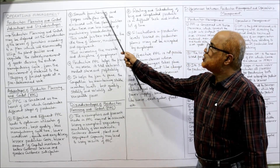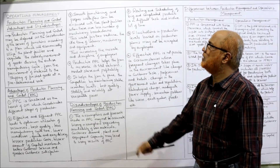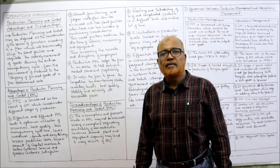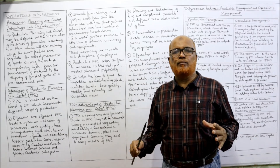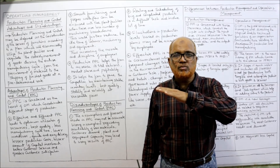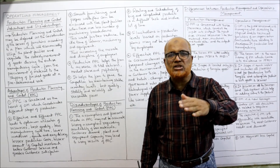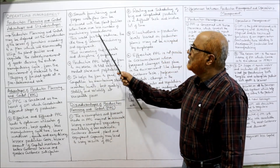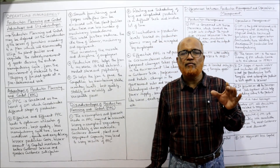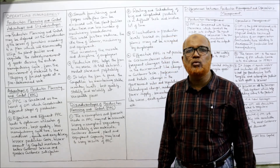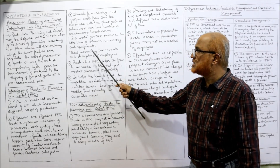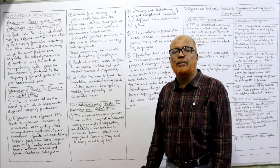Thirdly, smooth functioning and proper workflow will be ensured within the plant facilities when there are fewer machinery breakdowns. When production planning and control is in place, there are fewer chances of machines breaking down and there is a smooth flow of work from the first stage to the last stage. This further reduces the idle time of labor, machinery, and equipment — idle time of labor gets eliminated and machinery can be effectively utilized.